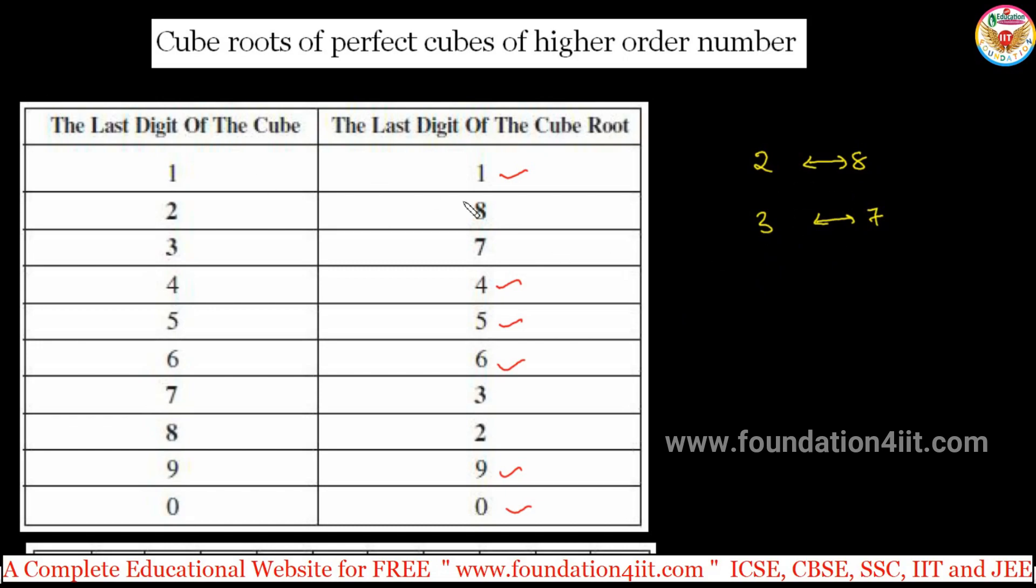Let us take one example, we do one by one. For example, find the cube root of 287,496. It is a perfect cube. To find out the cube root of this, last 3 digit number - units, tens, hundreds - you can make it as one set.